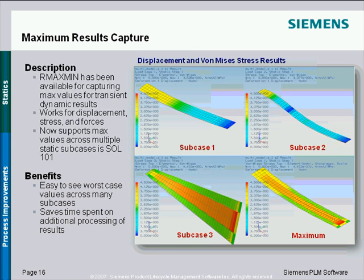Mark asked whether it captures maximum and minimum — for example, maximum negative values. This is for every single result type calculation. The user can ask for maximum value or maximum absolute value, so it would capture the maximum negative value in absolute terms.